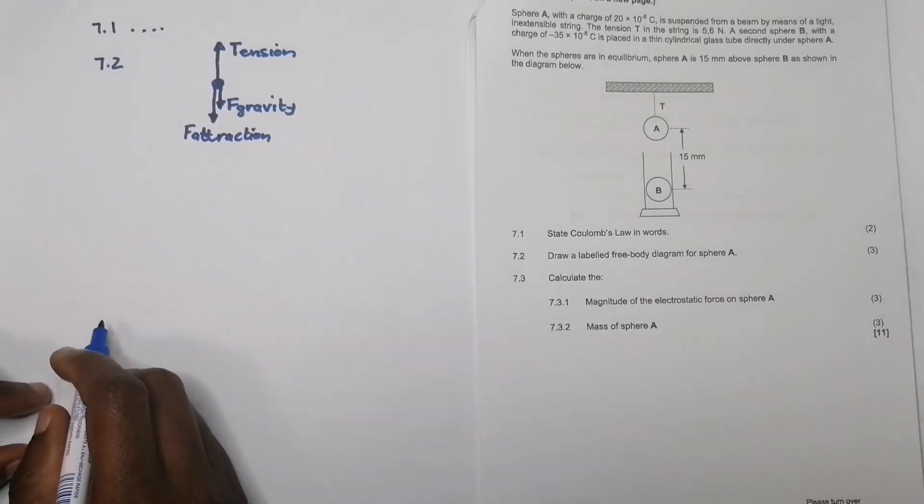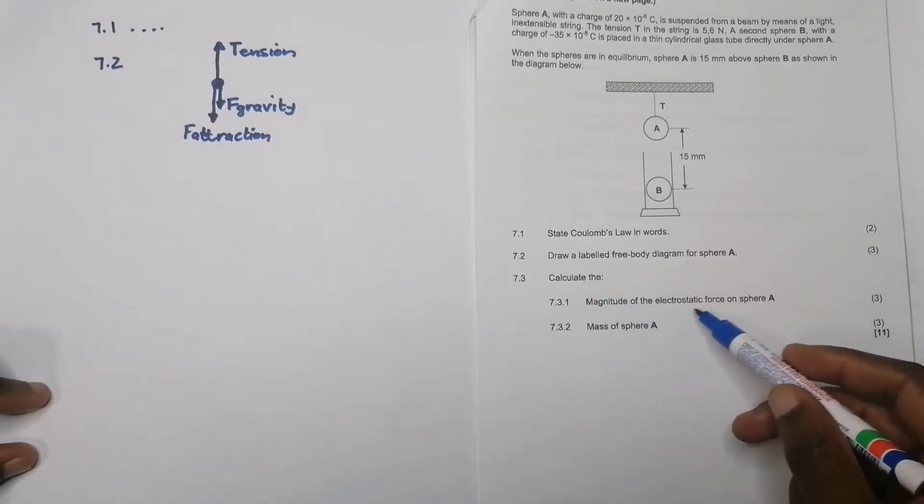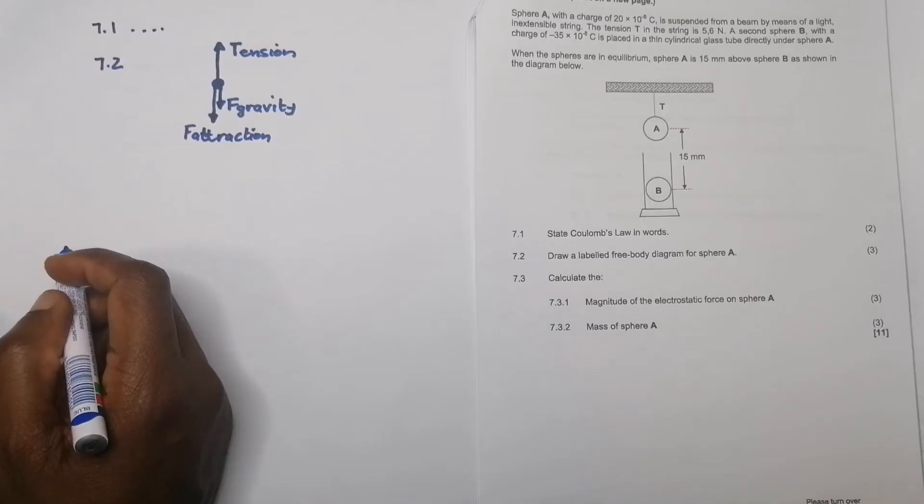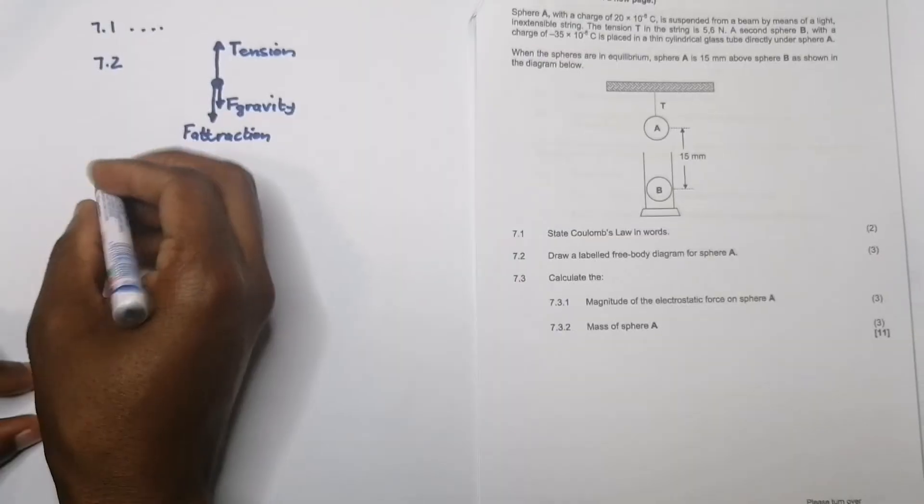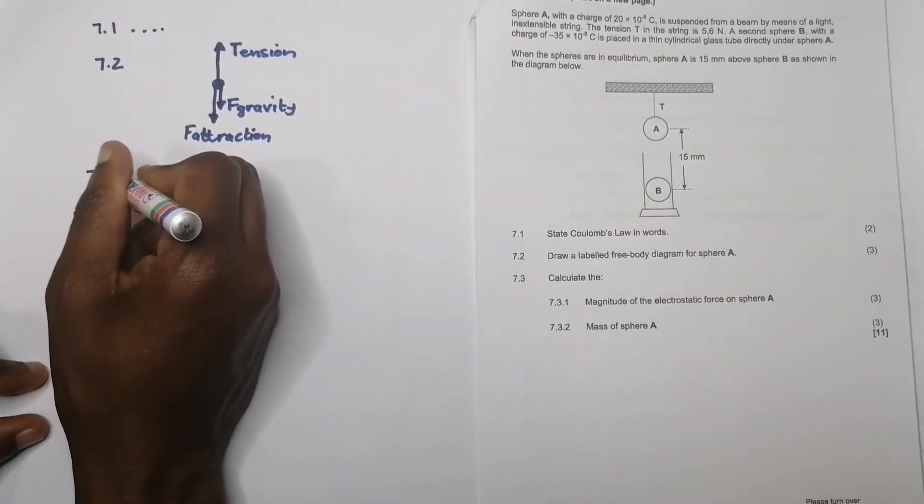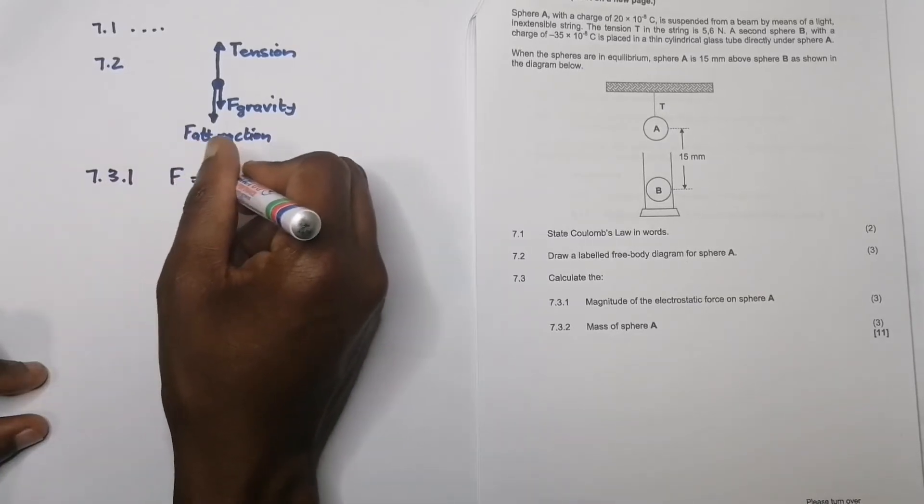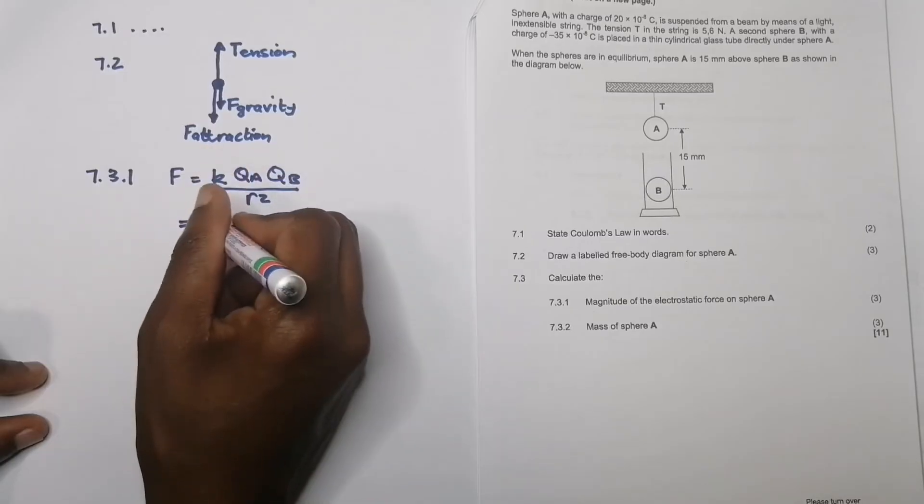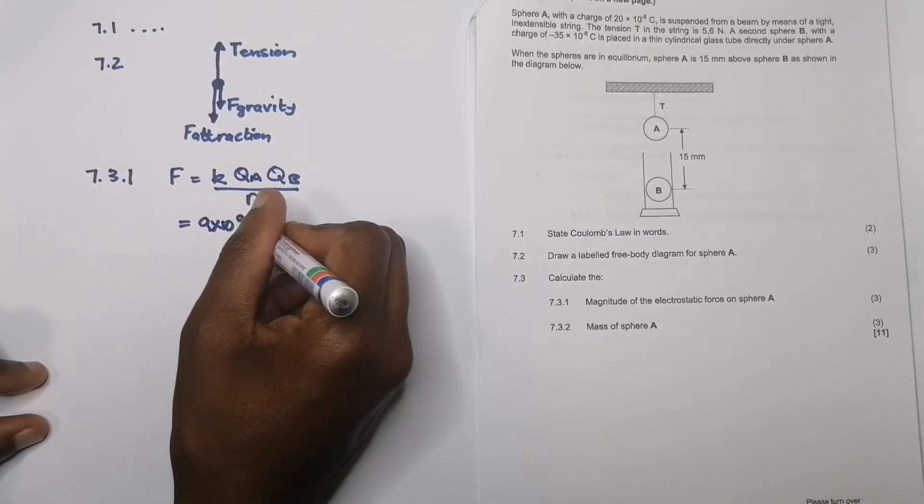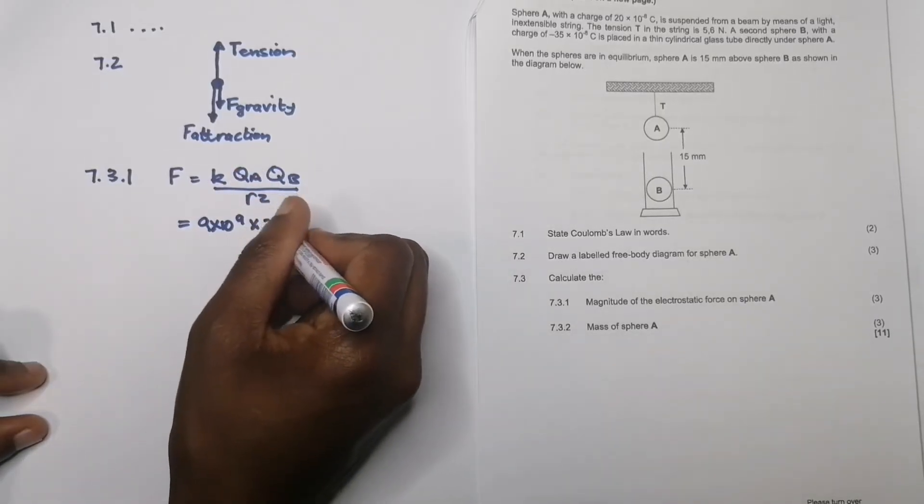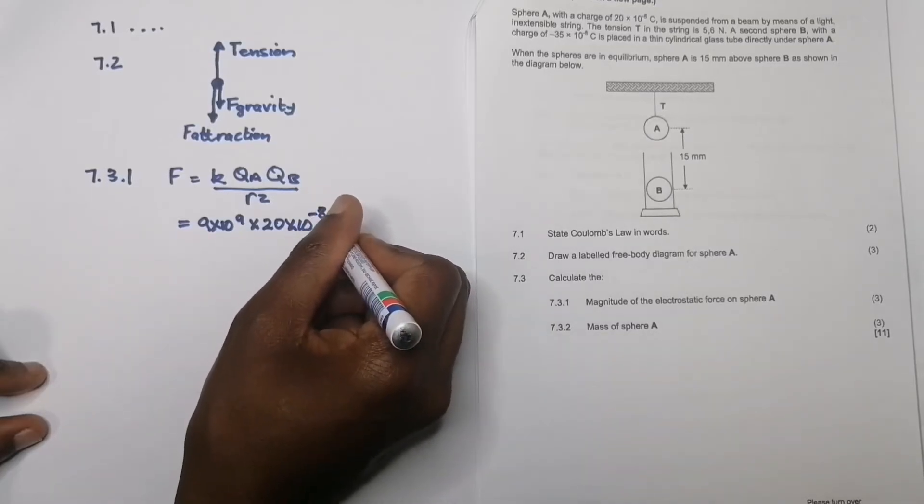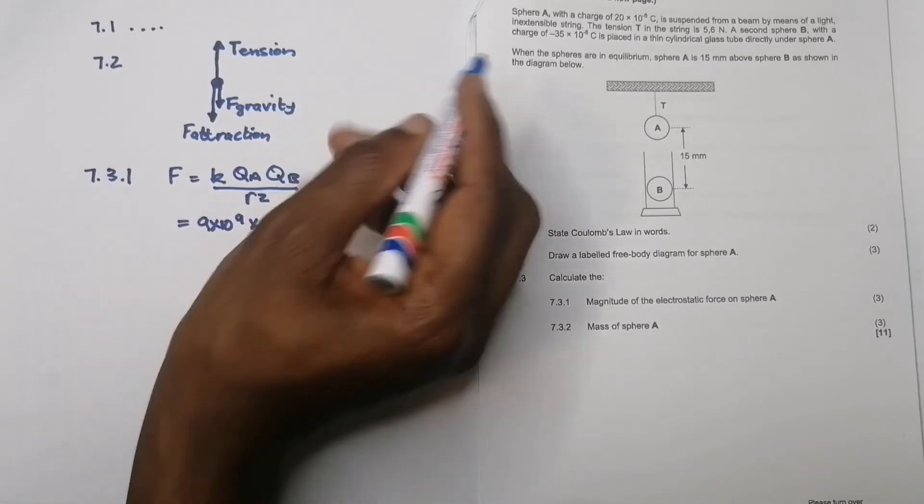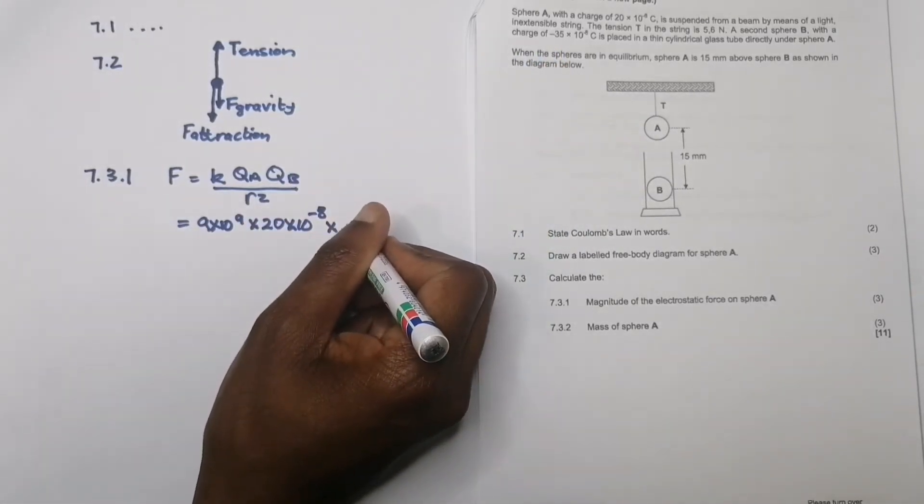They say calculate the magnitude of the electrostatic force on sphere A. We are given the magnitude of the two charges and the distance between them, so we're simply going to apply Coulomb's law. F equals k times Q_A times Q_B divided by r squared. That's Coulomb's constant, 9 times 10 to the power 9. The charge on A is 20 times 10 to the power minus 8. Remember when I use this formula, I'm going to substitute the absolute values without the signs. We use the signs to determine direction.